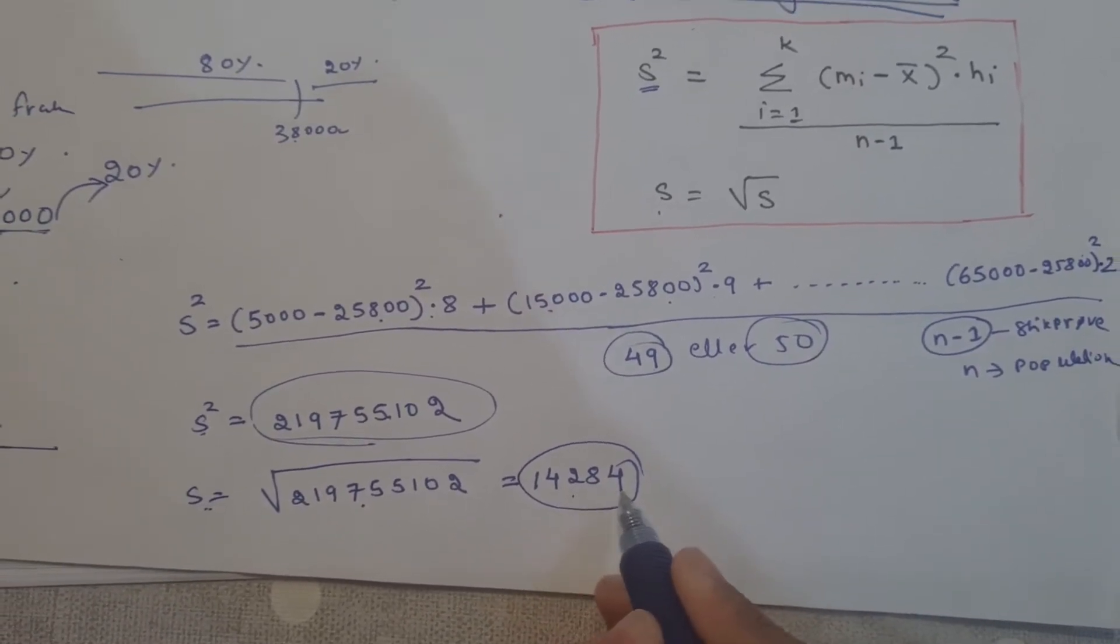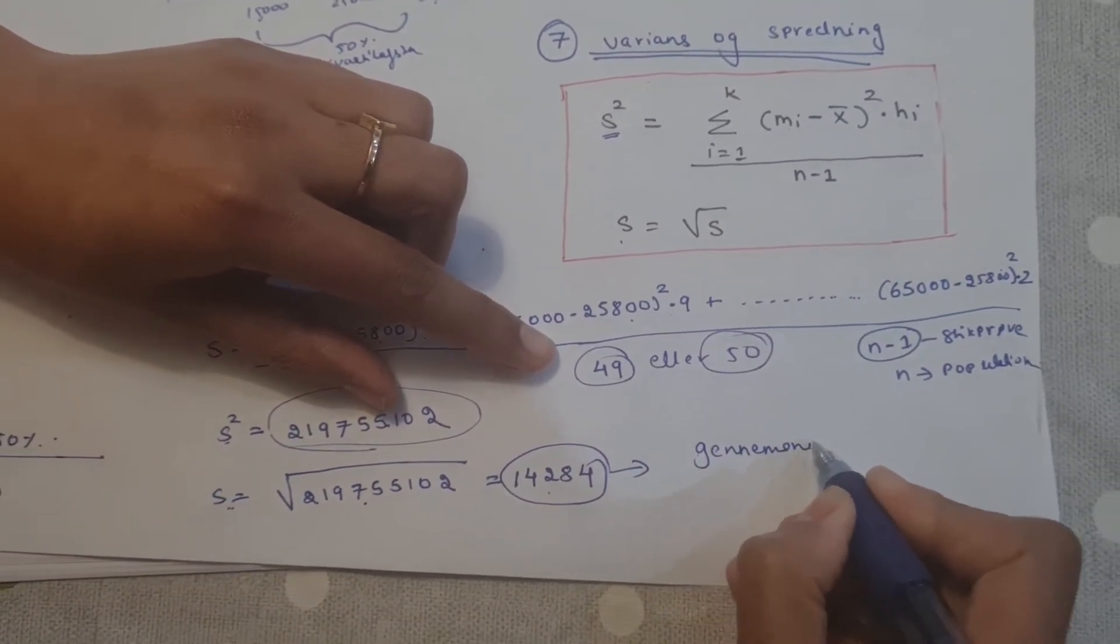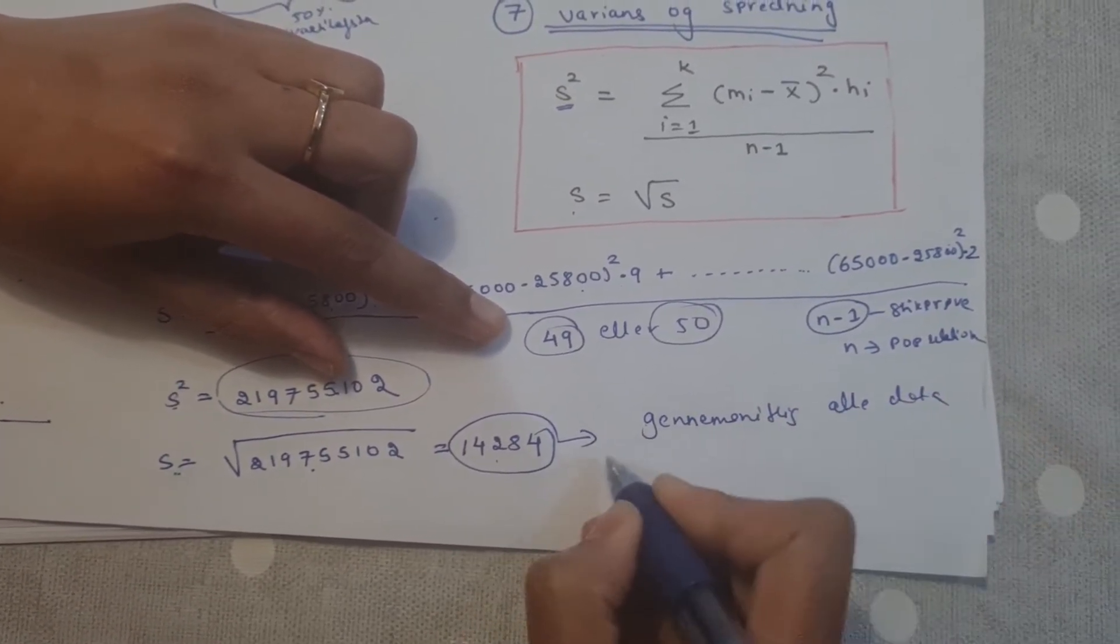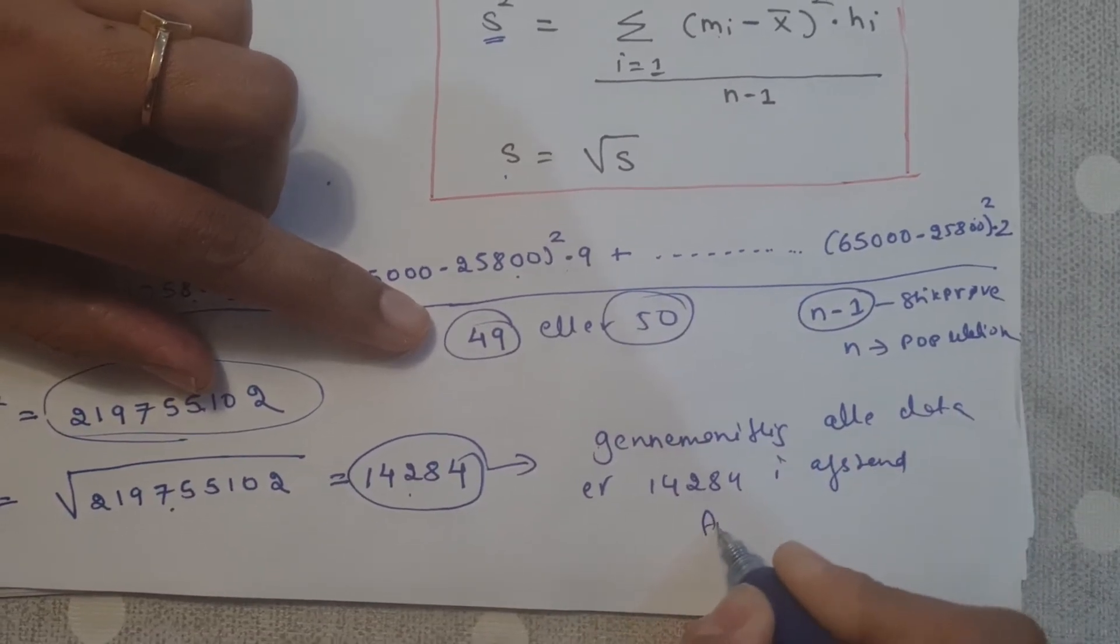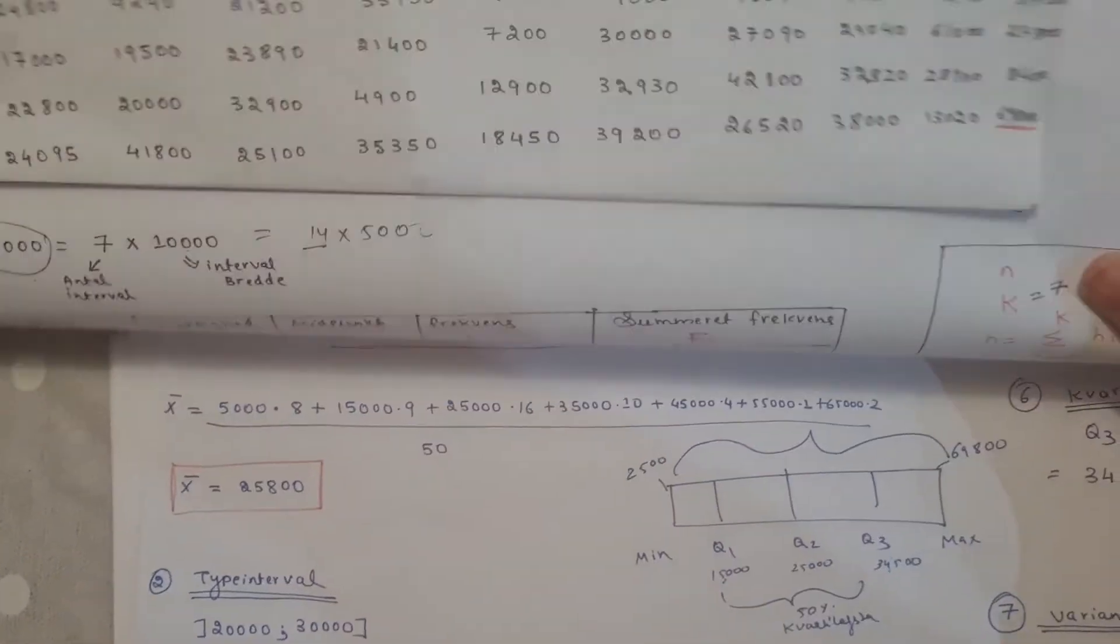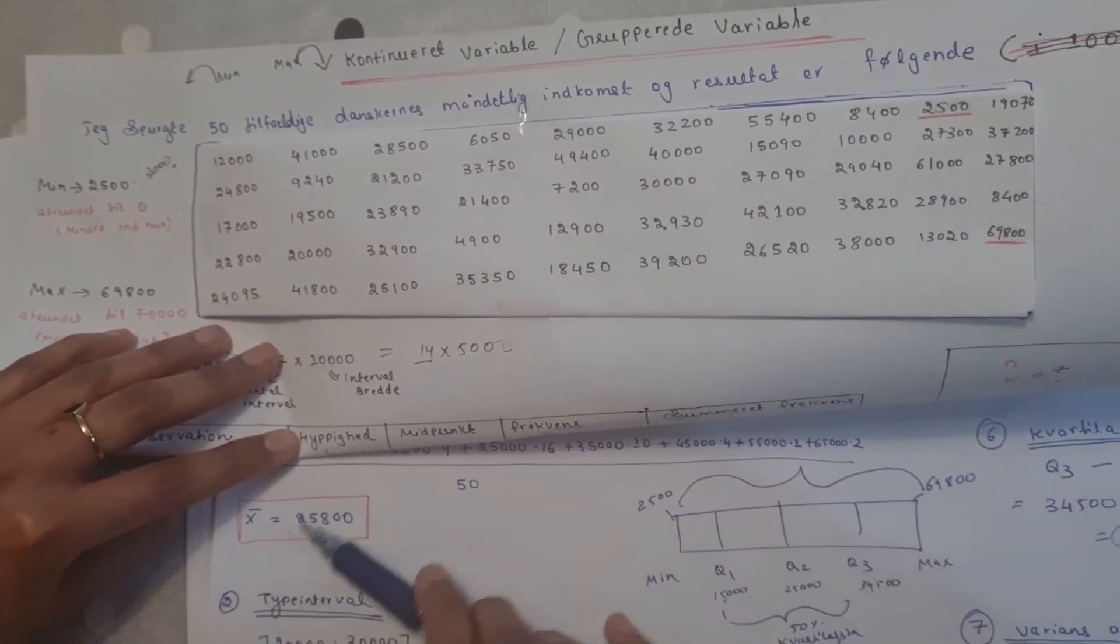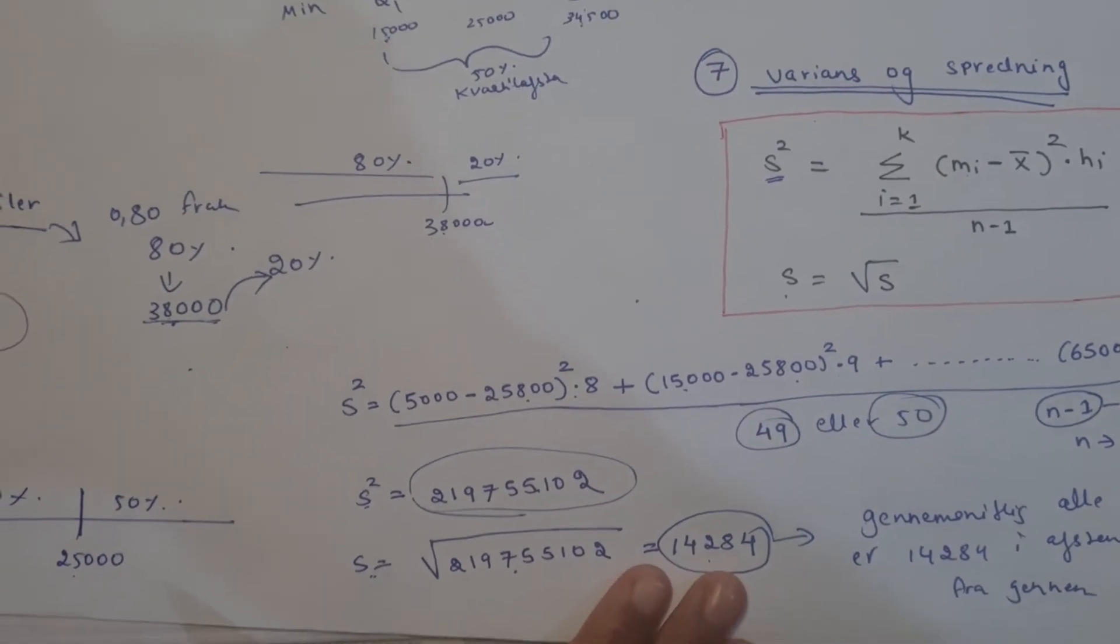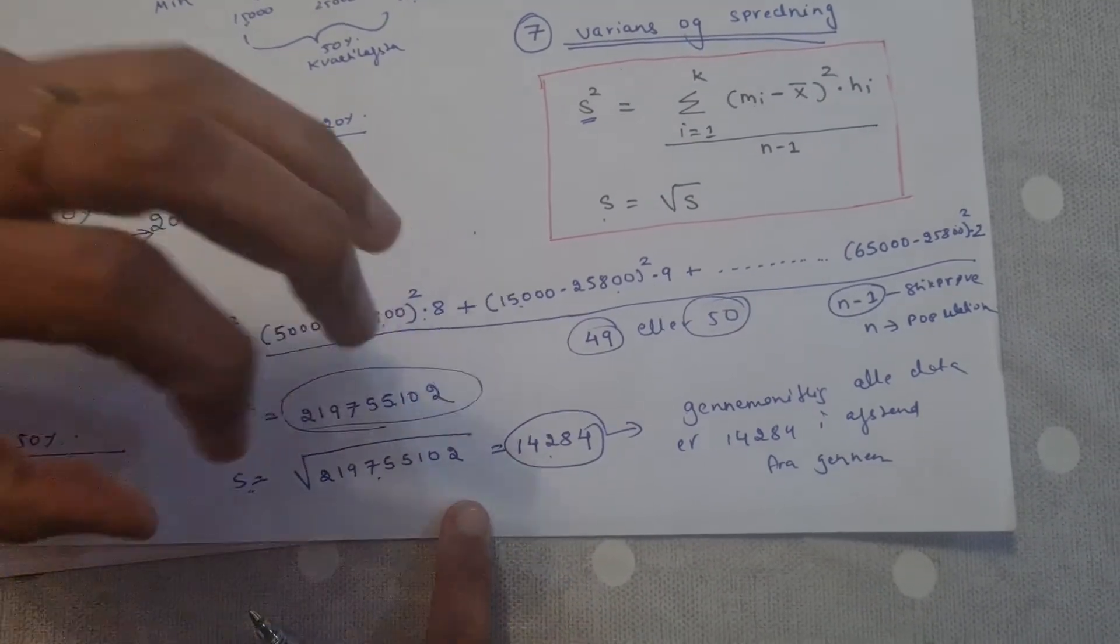Variance is not so important. To find spredning (standard deviation), take the square root of variance. So I found my spredning is 14,294. This simply means that the average distance from the mean is 14,294. That means the mean is here, and the average distance of all observations from the data's mean is 14,294.